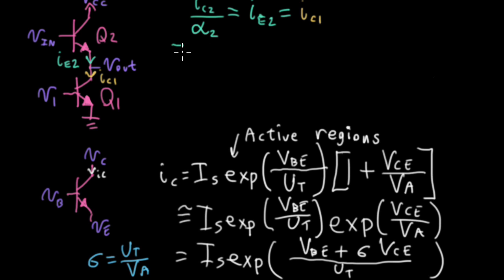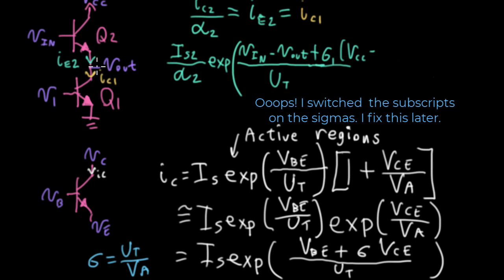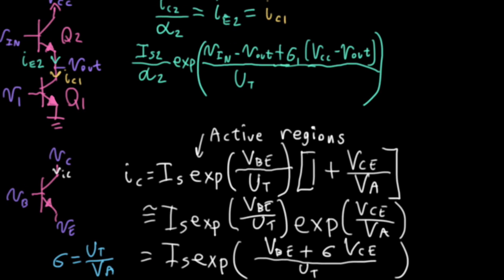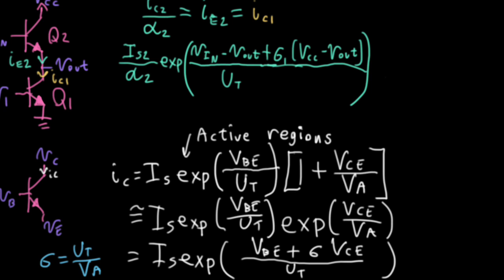So on the left here, I'll write IS2 over alpha2. Notice that right now, I'm assuming that the transistors may not be matched. Later, we'll see what happens if we can assume the transistors are matched. I have exp, voltage at the base is going to be VN minus the voltage at the emitter is Vout. And this is all over UT. I also need to have this term here. So I'll have sigma1 VCC minus Vout. So that's the collector voltage minus the emitter voltage, which is Vout. I think I need to move this over this way to leave some space.